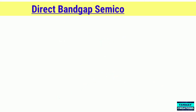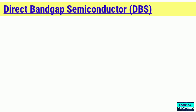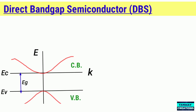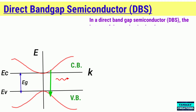The band gap represents the minimum energy difference between the top of the valence band and the bottom of the conduction band. However, the top of the valence band and the bottom of the conduction band are not generally at the same value of electron momentum or wave number.